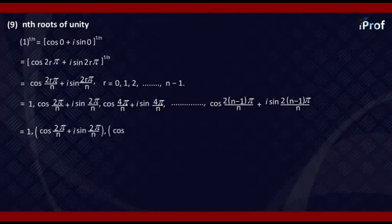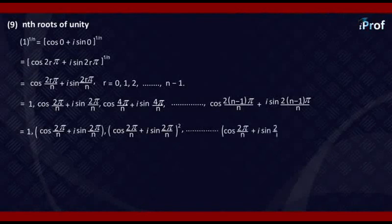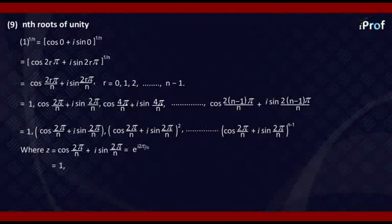[cos(2π/n) + iota sin(2π/n)]^(n-1). If you put z = cos(2π/n) + iota sin(2π/n), it becomes 1, z, z², z³, ... z^n.